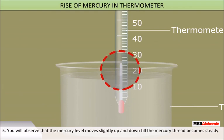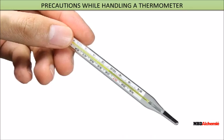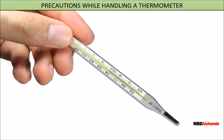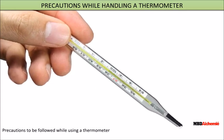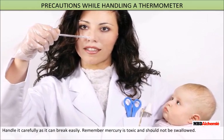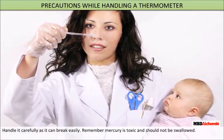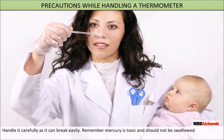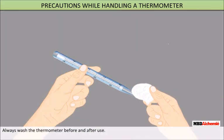Observe the movement of mercury in the thermometer — you will observe that the mercury will shift slightly up and down till the mercury thread becomes steady. Precautions while handling a thermometer: handle it carefully as it can break easily. Remember, mercury is toxic and should not be swallowed. Always wash the thermometer before and after use.